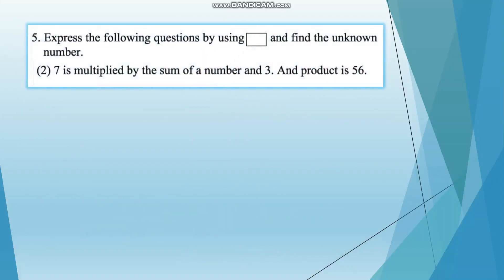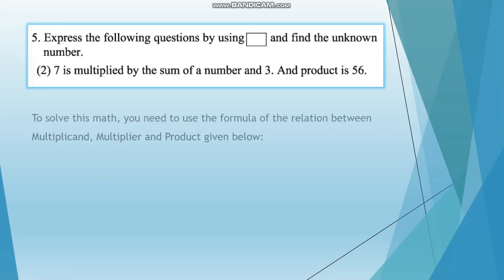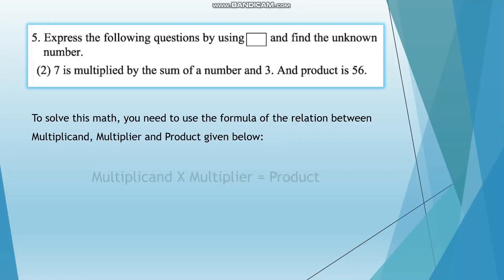Question number 2: 7 is multiplied by the sum of a number and 3, and the product is 56. To solve this, you need to use the formula for the relationship between multiplicand, multiplier, and product: multiplicand multiplied by multiplier equals product.